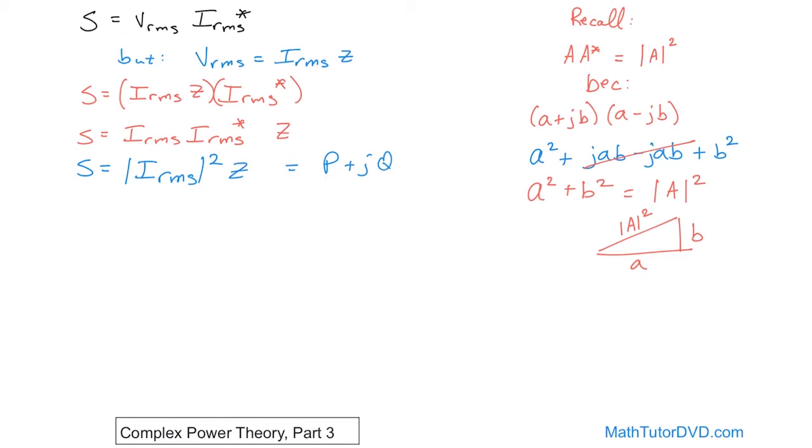And this, ladies and gentlemen, looks like from DC analysis P is equal to I squared R. Remember that? I squared R. That's the calculation of power through a resistor. So here in the AC terminology, it's magnitude of the current squared times the impedance Z.